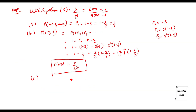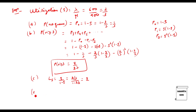Next, we calculate the average number of customers in the system, Ls. The formula is Ls = rho / (1 − rho). Substituting: Ls = (2/3) / (1 − 2/3), which gives the answer as 2.